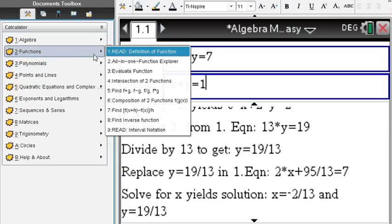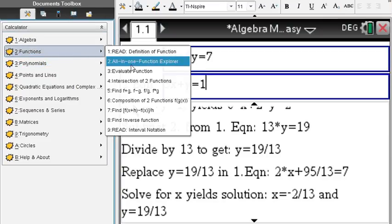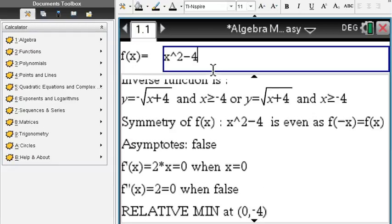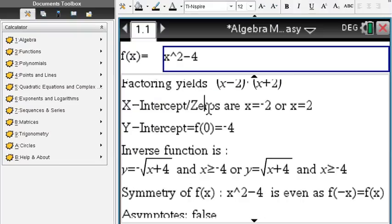If you change your equation, you can see that the output changes immediately and your steps vary as well. Let's look at some functions. You can do the all-in-one explorer, x squared minus 4, scroll up.